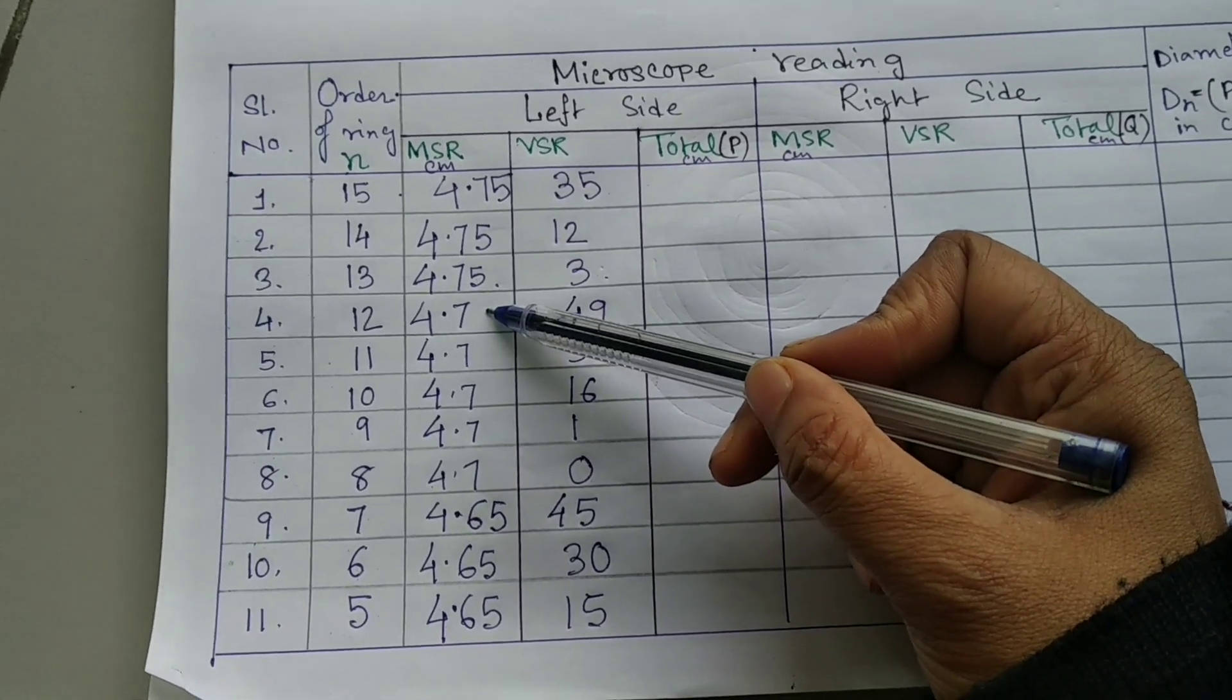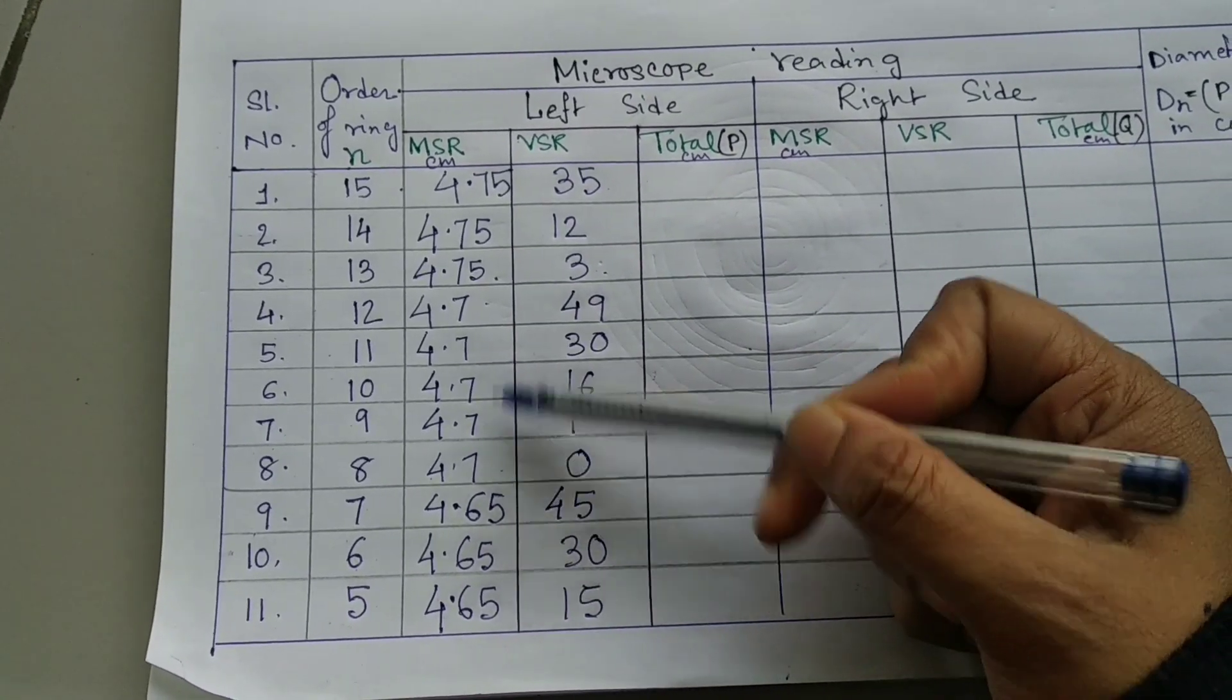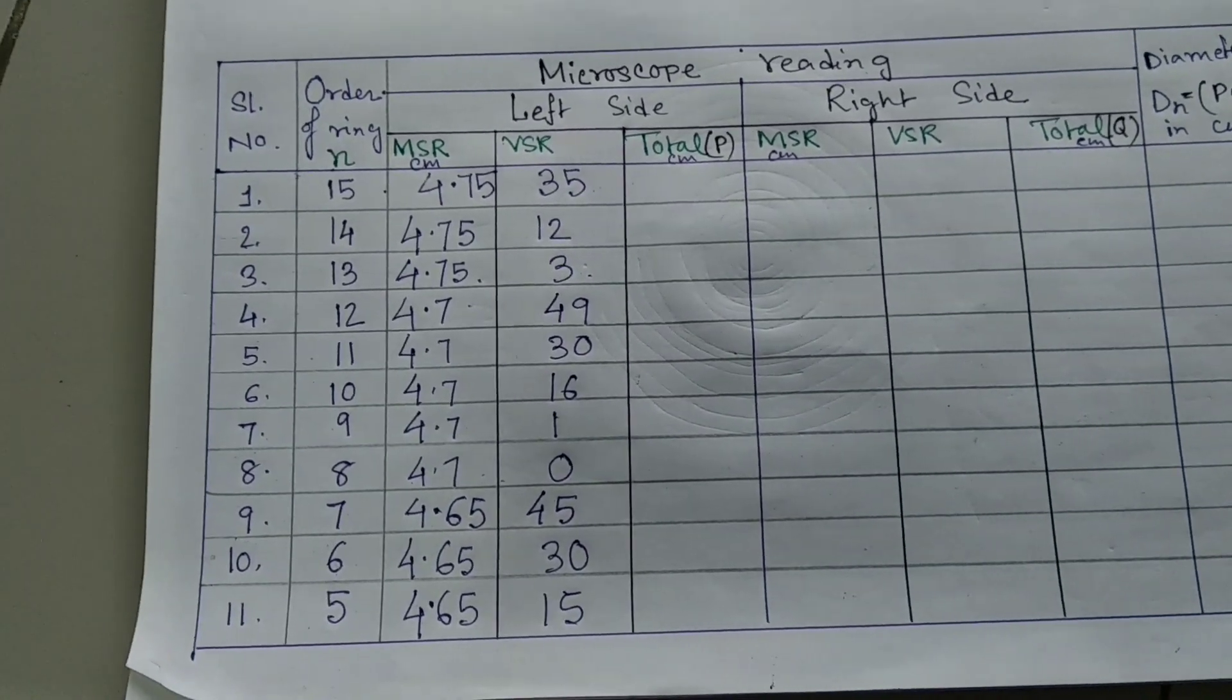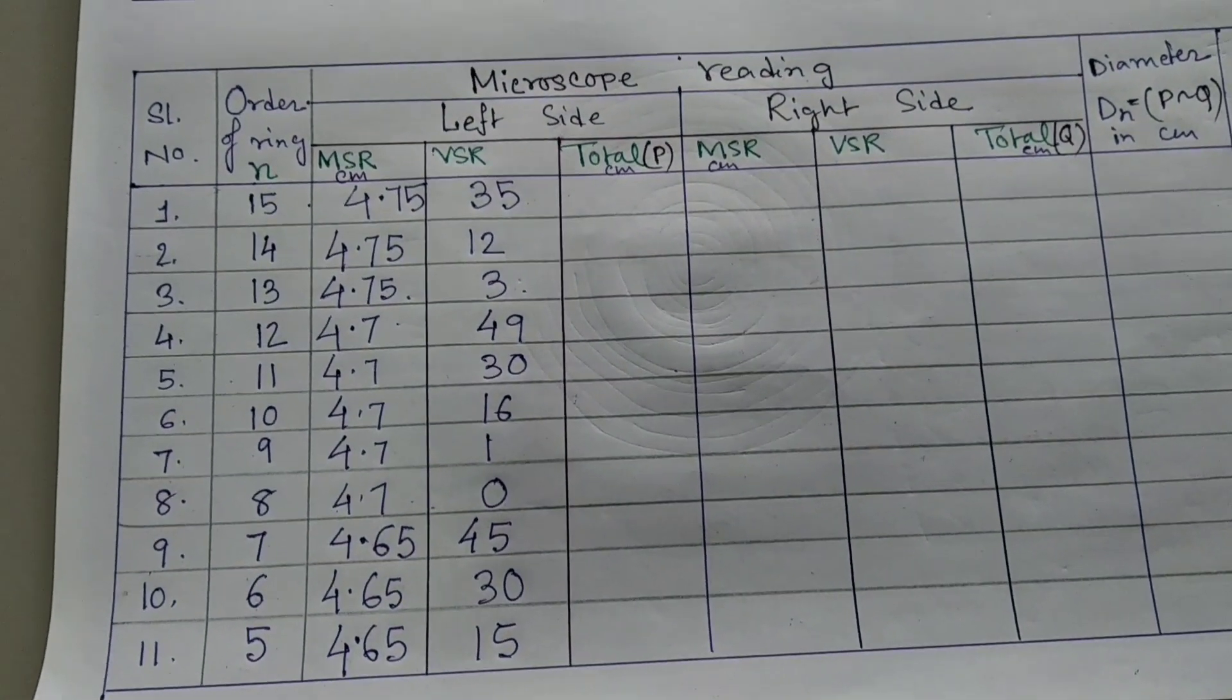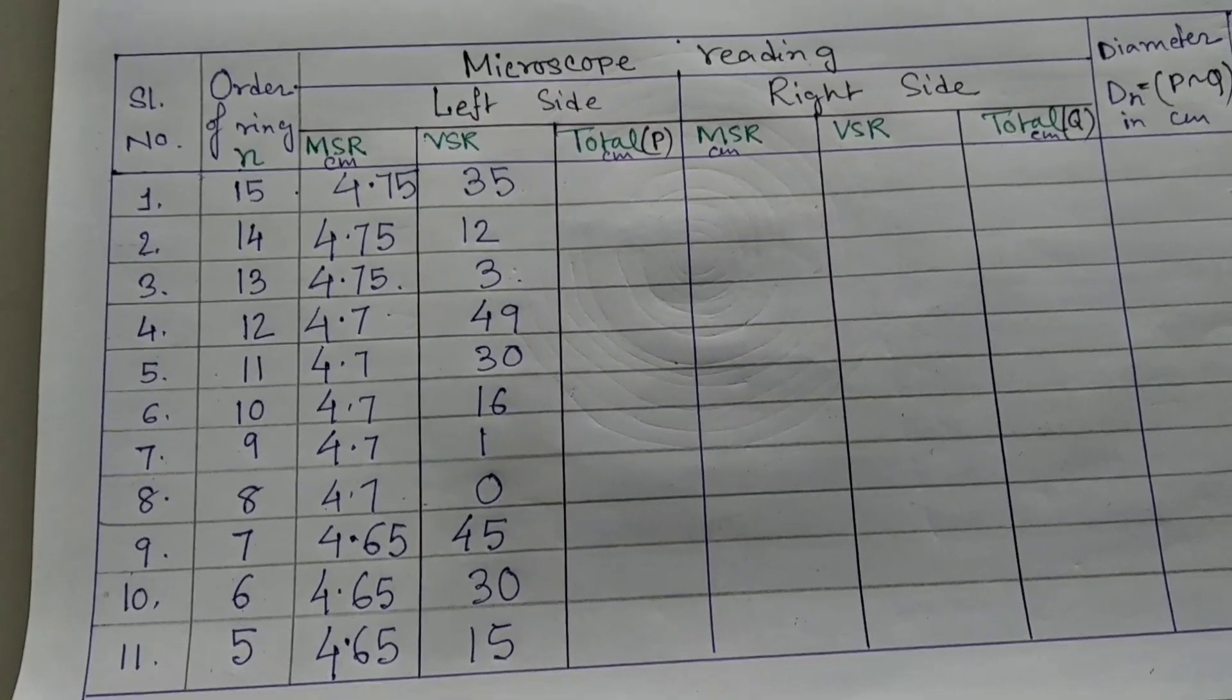And here also, after 12 to 8, we can't find any change in main scale reading. This is because of fringes are very nearer to each other. The circles are very nearer to each other. Approx same diameter.